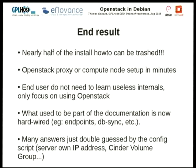The result is: if you look at the official OpenStack documentation, just for installing something as simple as Glance to upload and use images, there's a huge amount of documentation because you need to manually create the database, manually create the access rights, manually populate it. Under Debian, you just do apt-get install glance and it does all of that for you.